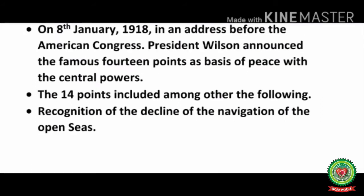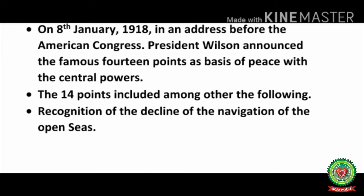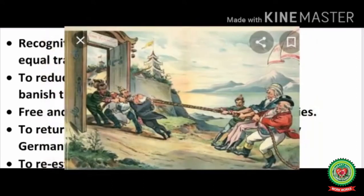On January 8, 1918, in an address before the American Congress, President Wilson announced his famous 14 Points as the basis of peace with the central powers. Congress is the name of the legislature of America. These 14 Points were not initially passed, as the Senate — the upper house — did not accept them. Wilson then put his 14 Points before the American public directly. Under public pressure, Congress ultimately passed Wilson's 14 Points, though the US Congress wanted to alter many points and in the end voted against ratifying them. One important term was that all countries should have freedom to navigate and trade in the open sea.